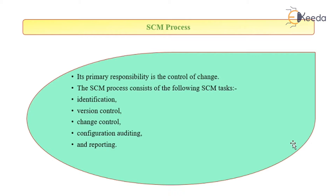That means first we have to identify the change. Various controls of versions are being done, then the change is being controlled. All the auditing is done or reporting of the audits is done. This is essential to carry out the software configuration management.